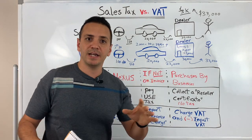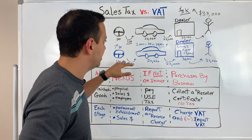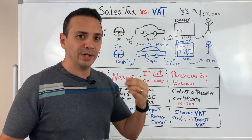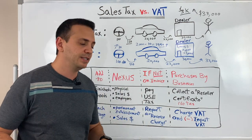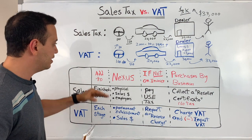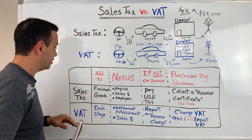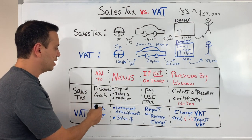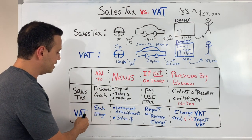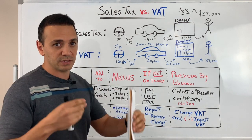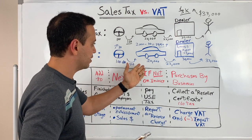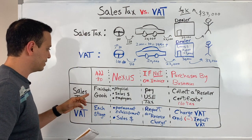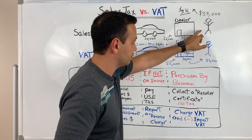Now that we've looked at an example of the supply chain both in the U.S. and in Europe, the biggest difference is that sales tax is added to finished goods, whereas VAT is added at each stage of the supply chain. VAT is added at every step of the way, versus sales tax which is only added at the point of sale to the end consumer.